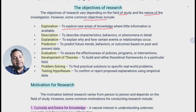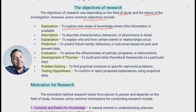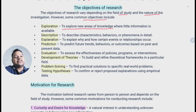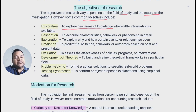Where very little information is available, we try to research those areas more to learn more. For example, a tribal community about which very little information exists — we collect a lot of data about them. That is exploration. The next objective is description — to describe characteristics, behavior, or phenomena in detail about a person, society, or institution. That is description.